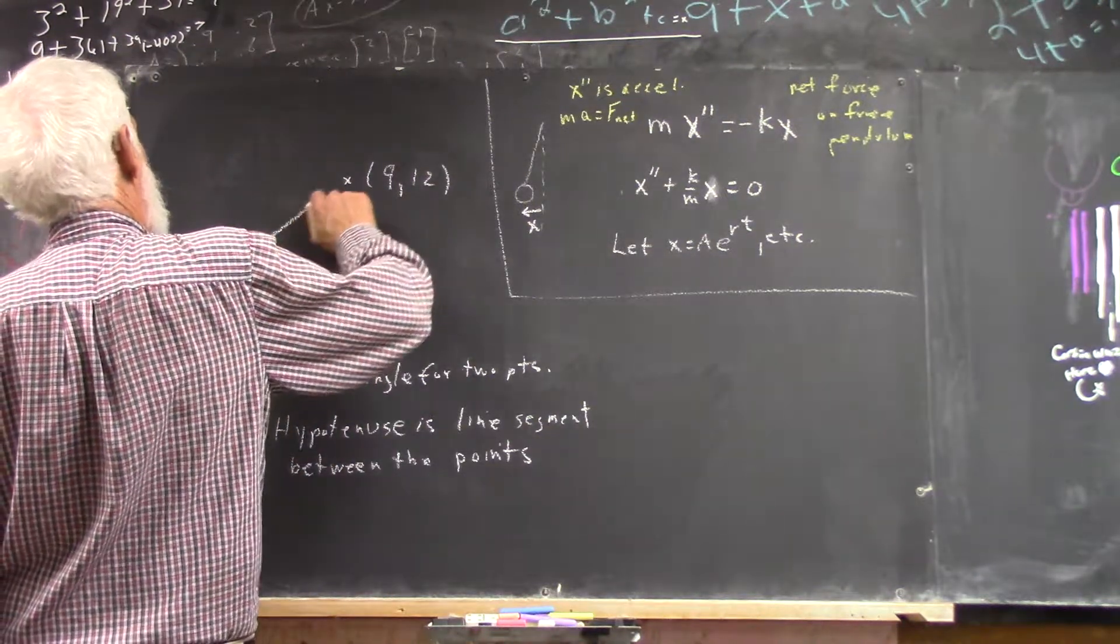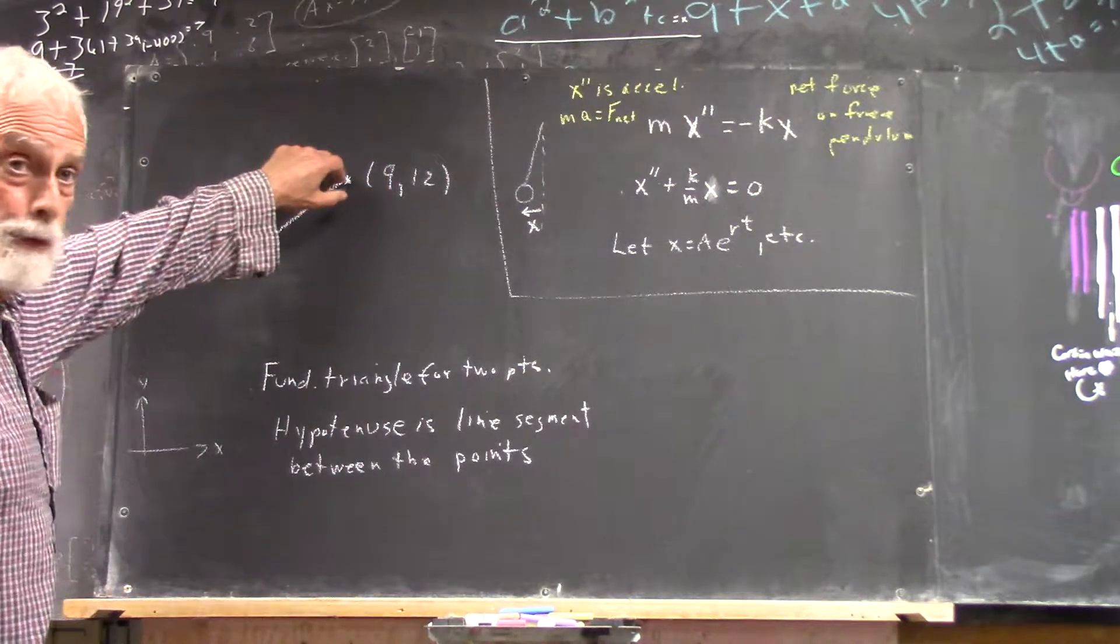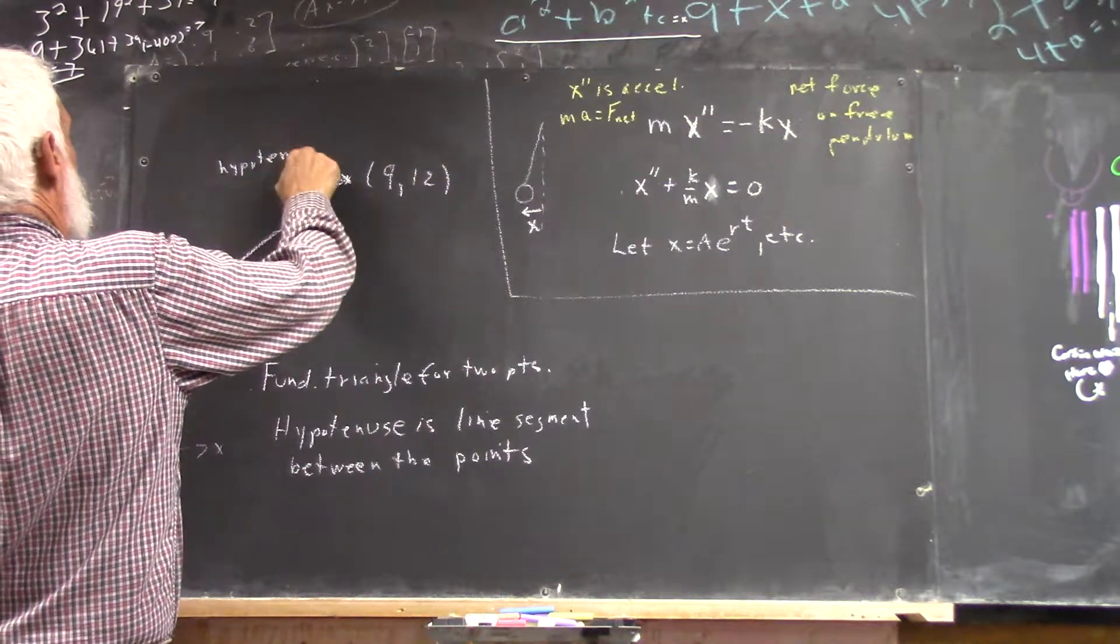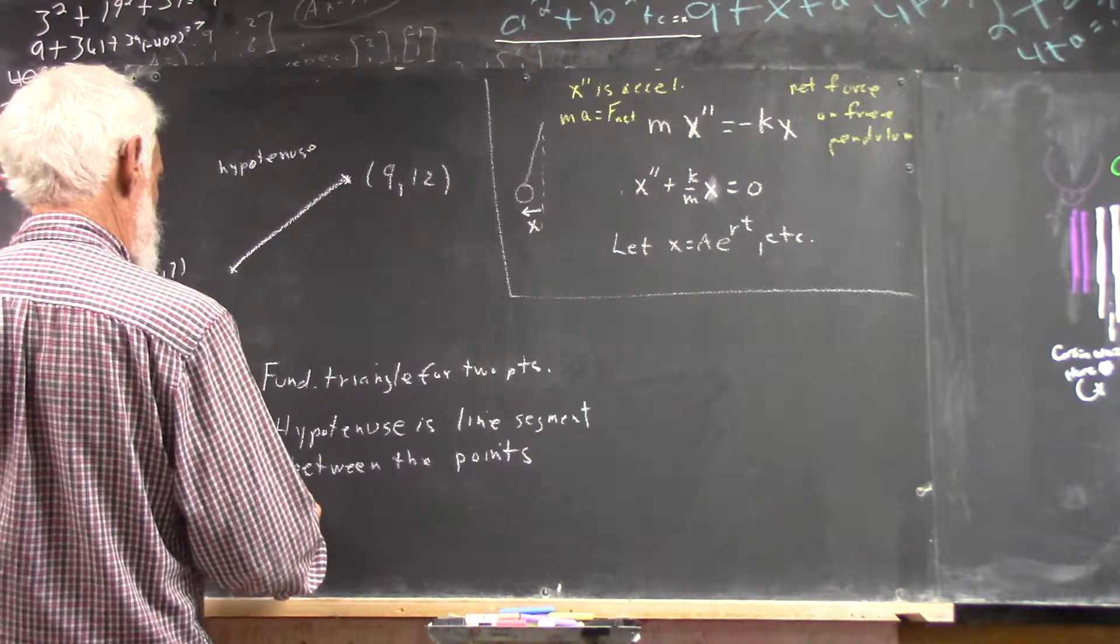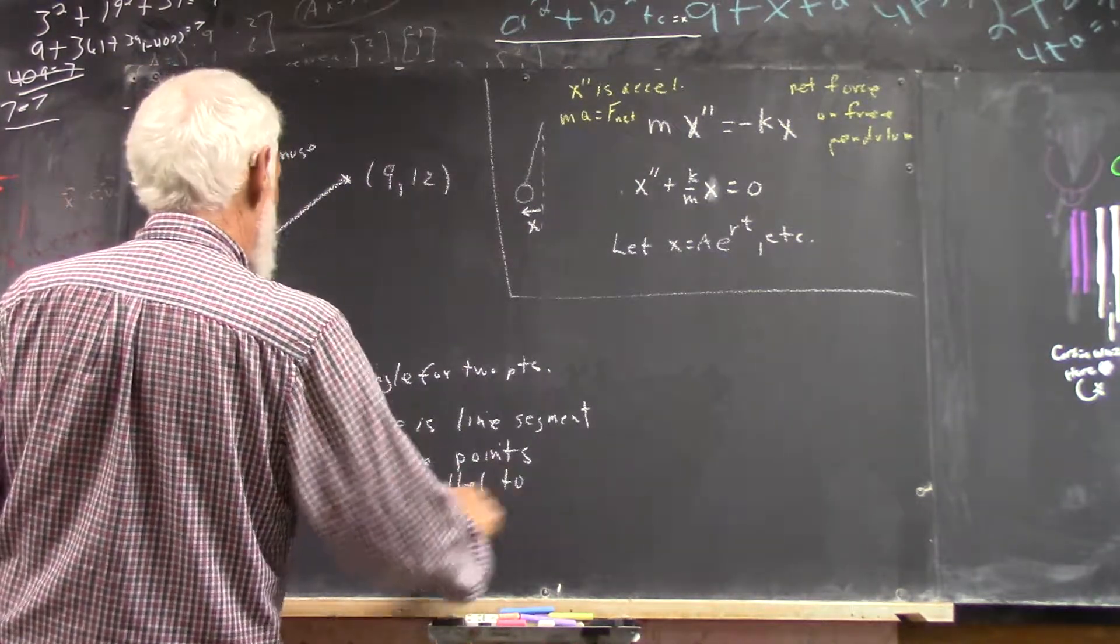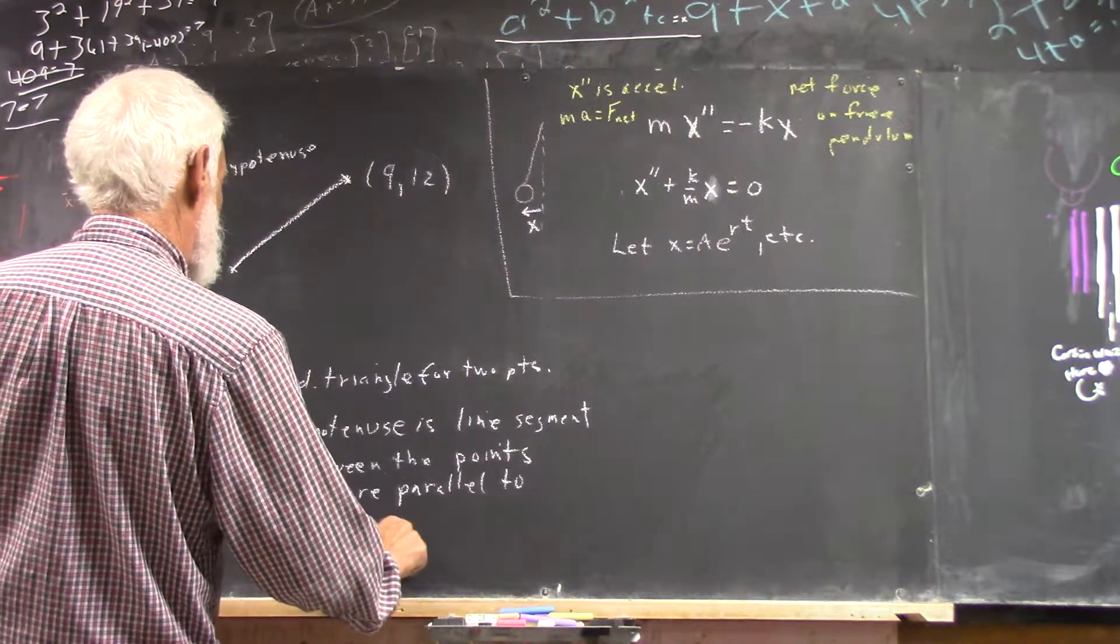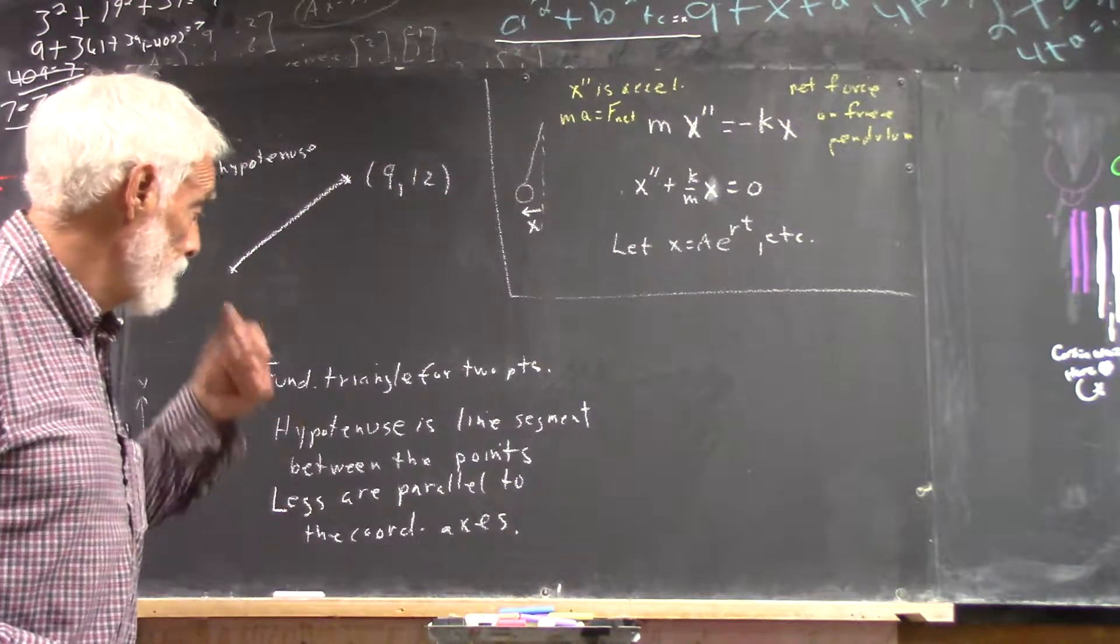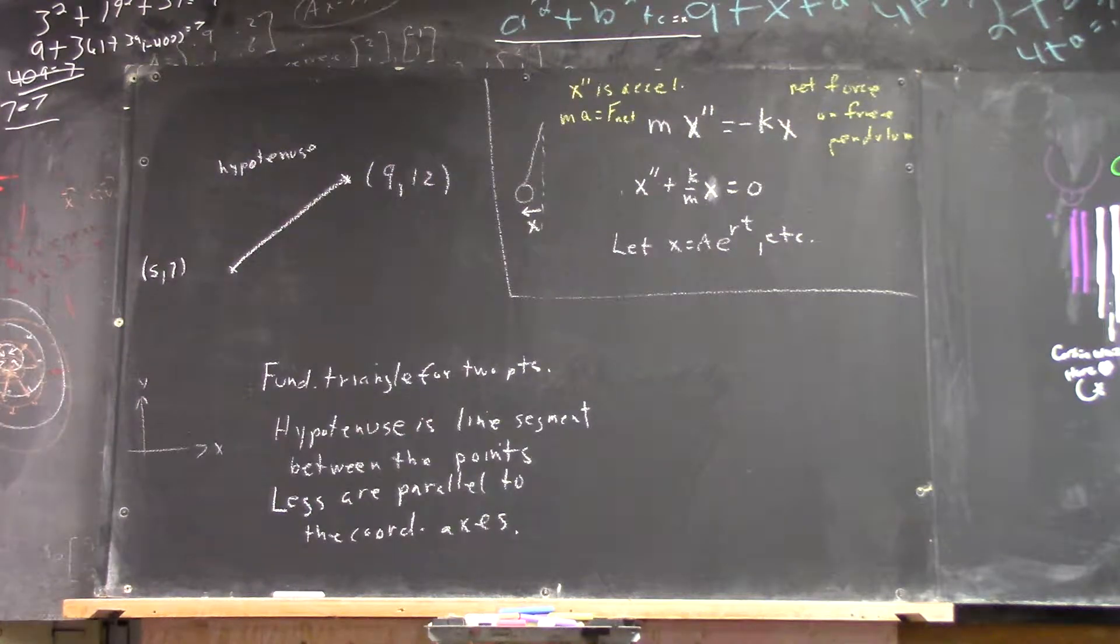So we sketch a line segment between the points. And this is hypotenuse. And the legs are parallel to the coordinate axis. So on your paper, complete the triangle. The legs have to be parallel to the coordinate axis. I'm going to give you about a minute. Sketch two points, hypotenuse, and the legs. Quickly.